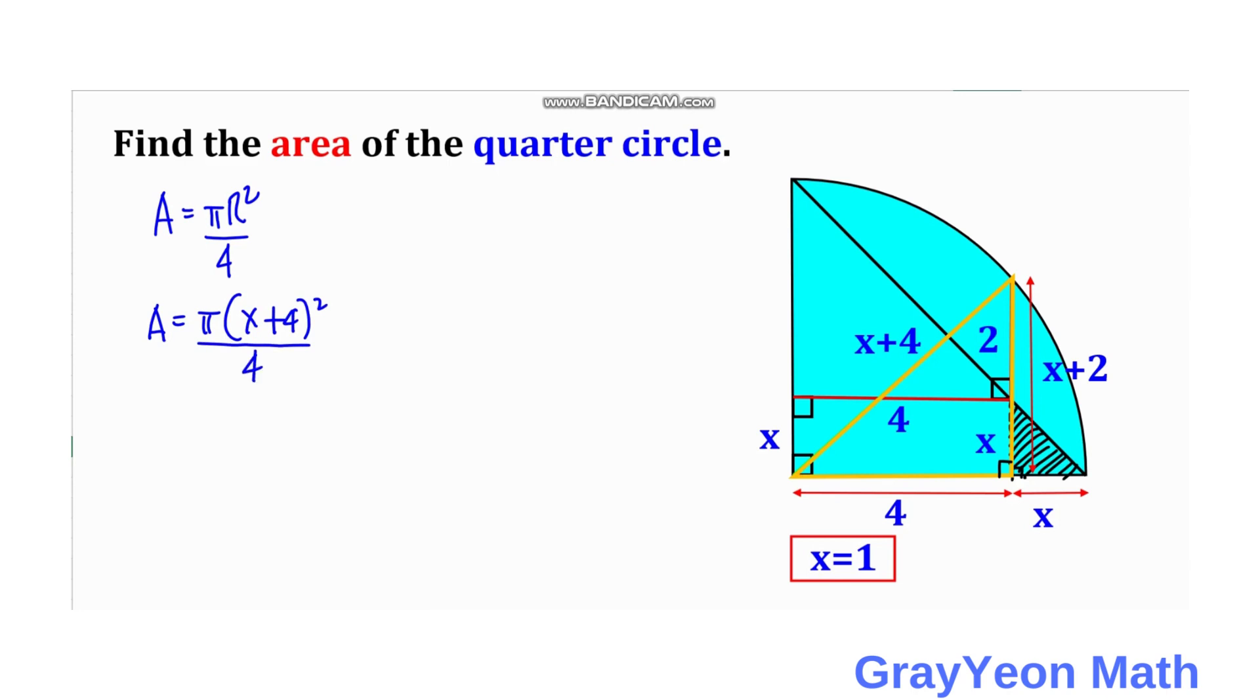But x is actually equal to 1, so area is equal to π times 1 plus 4 squared all over 4. So area is equal to, this is actually 5, then if you square 5, you have 25π over 4 square units. And that is our answer.